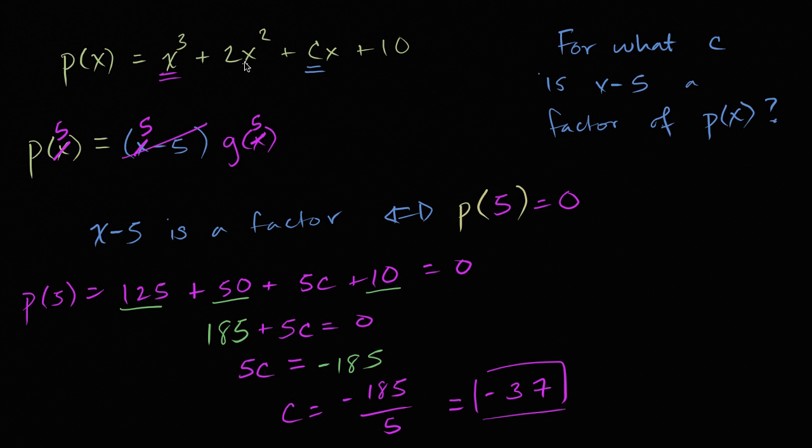And we're done. If this was x to the third plus 2x squared, minus 37x plus 10, then x minus five would be a factor of this polynomial.